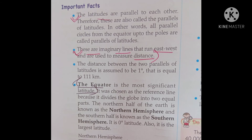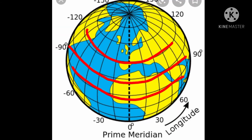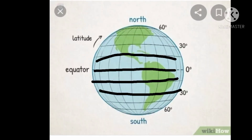Now I will mention some important facts. The latitudes are parallel to each other; therefore, these are called the parallels of latitude. These are imaginary lines that run east to west. The distance between two parallels of latitudes is assumed to be 1 degree, which is equal to 111 km.